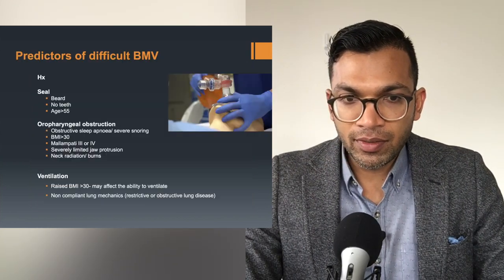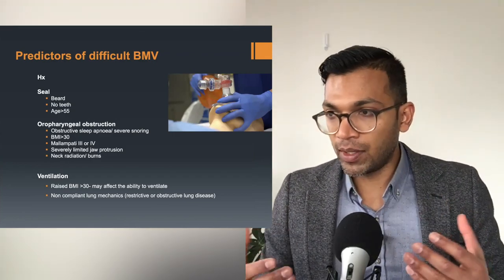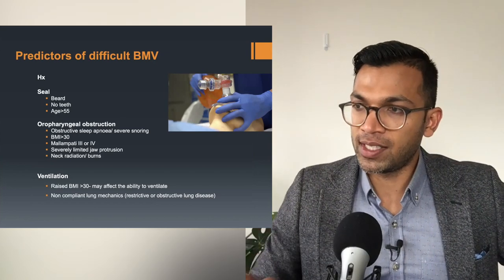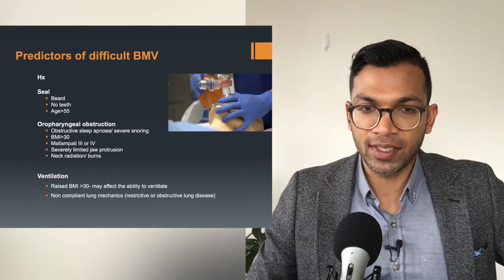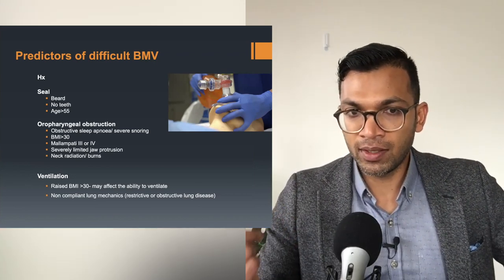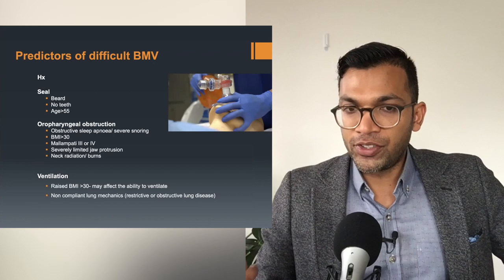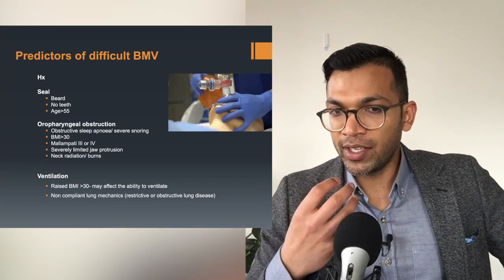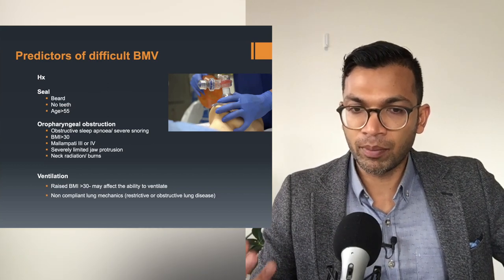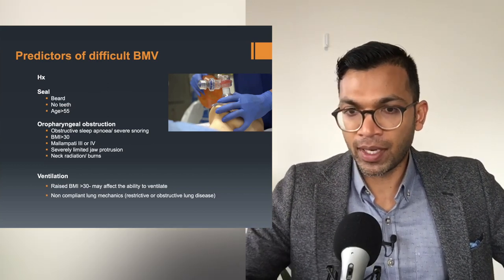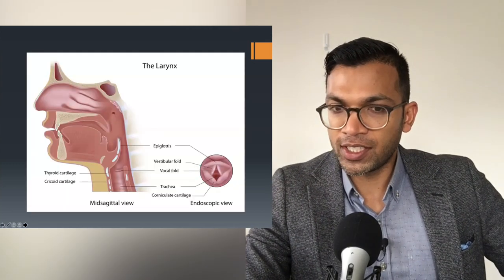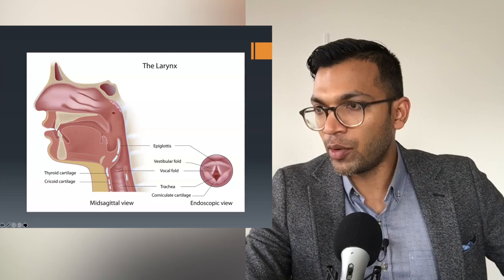The predictors are: history of past difficulty; seal problems from beard, no teeth, or age; oropharyngeal obstruction causing crowding; and non-compliant lung mechanics (BMI is a factor). Using the same anatomical logic, think about why LMA ventilation would be hard.